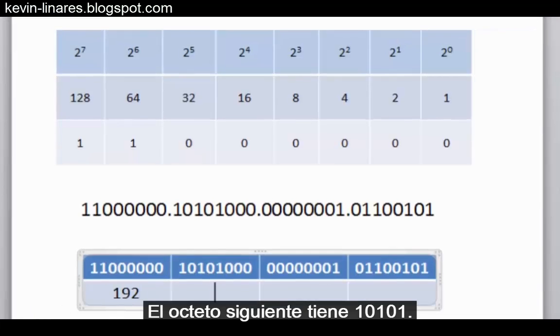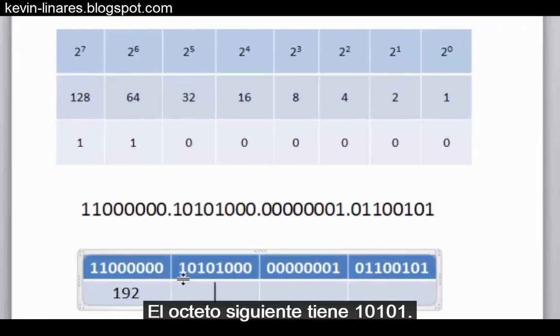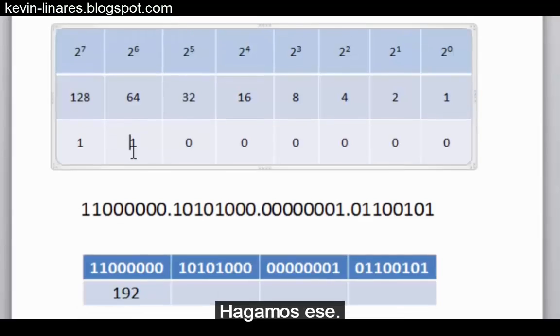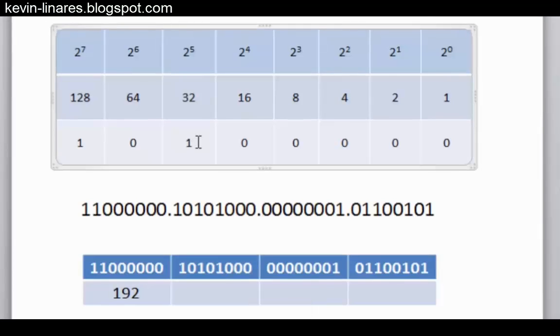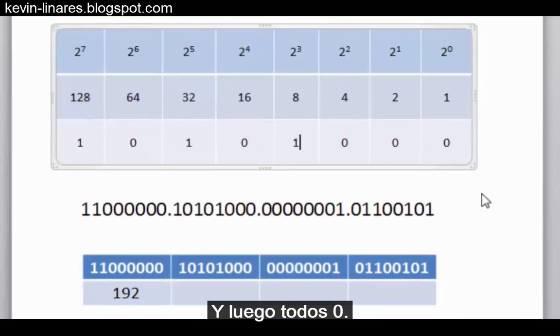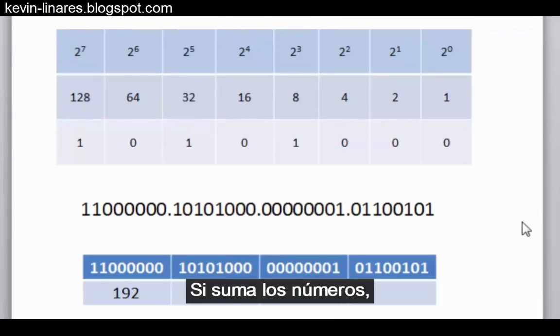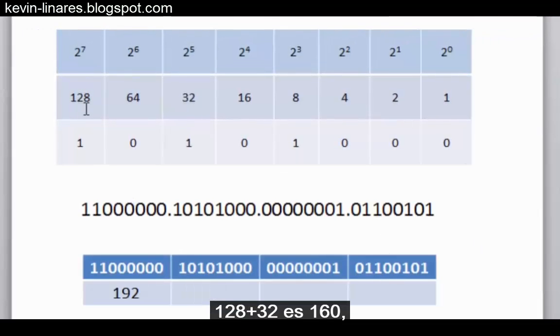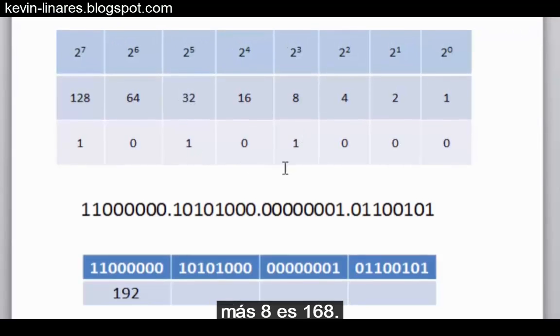Now, the next octet has 1, 0, 1, 0, 1. Let's do that one. 0, 1, 0, 1, and then all zeros. If we count up the numbers, 128 plus 32 is 160 plus 8 is 168.